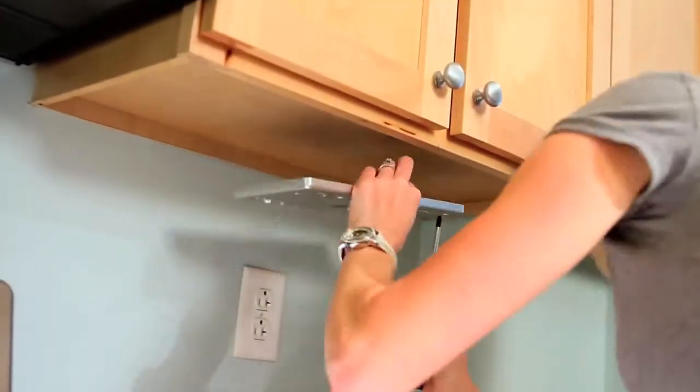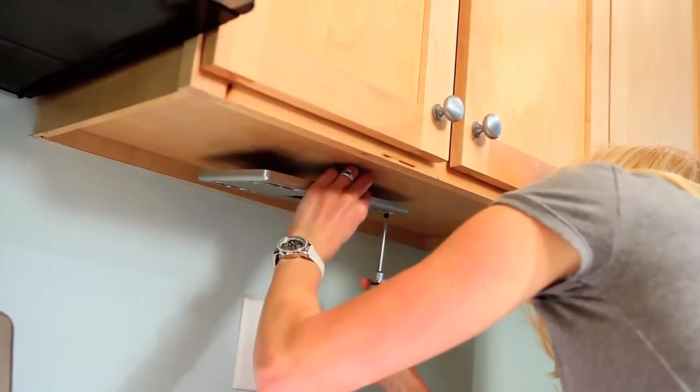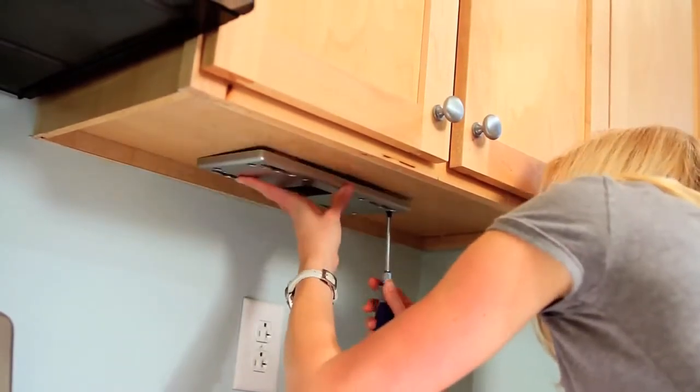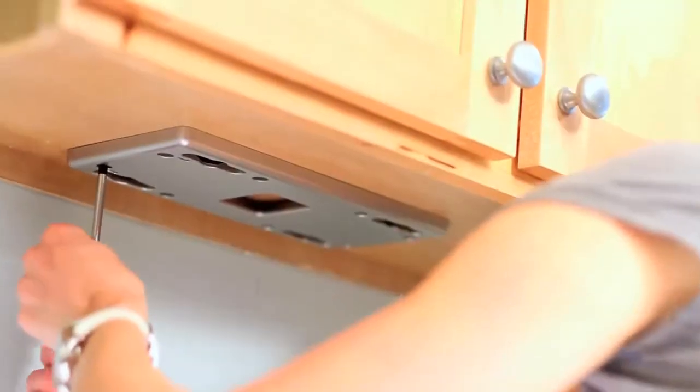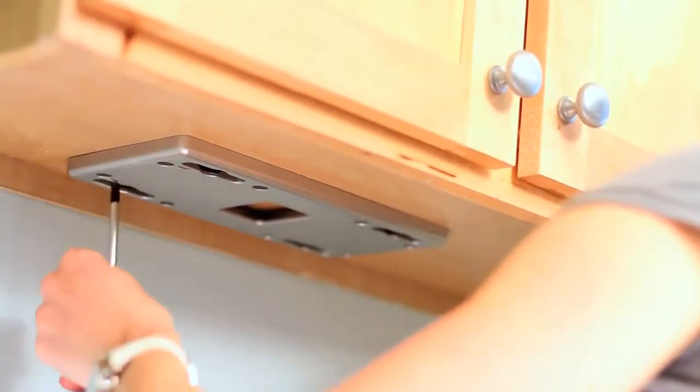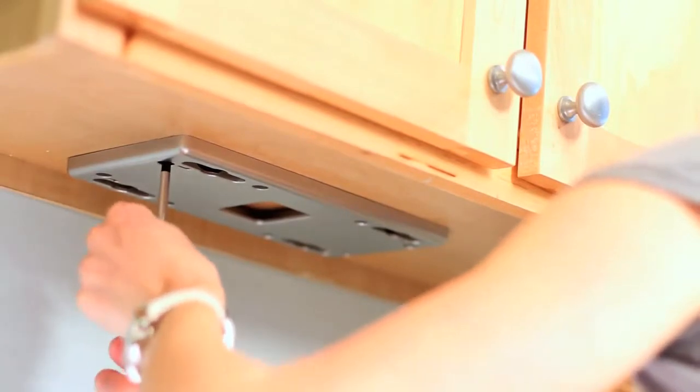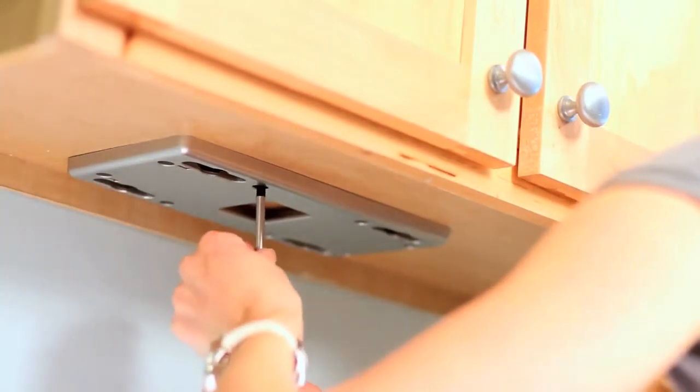Next, take the mounting bracket and begin securing it into place by inserting your first screw into one of the holes on the bracket matched up to one of the pilot holes you drilled. Do the same for the other seven screws until your mounting bracket is firmly in place. Just be careful not to over tighten the screws.